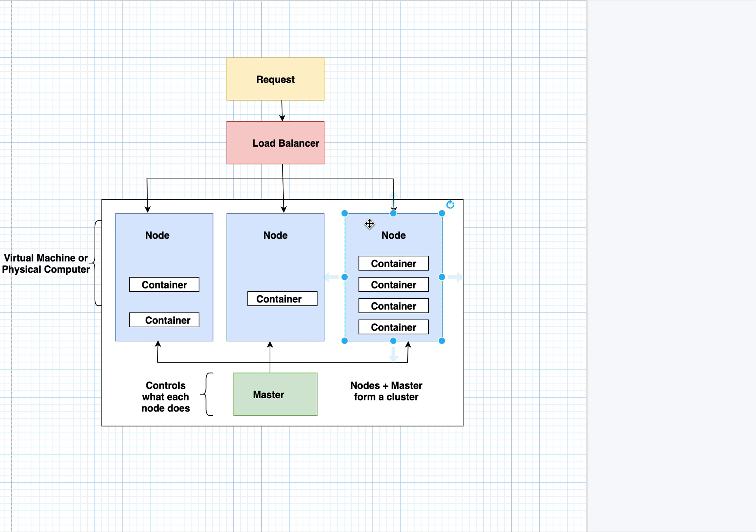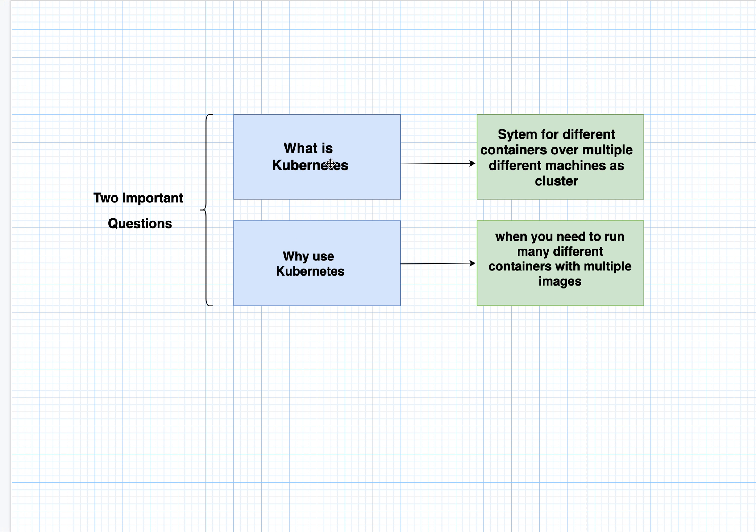To answer the initial questions: what is Kubernetes? Kubernetes is a system for running different containers over multiple machines as a cluster. You run your application components across different machines in the form of a cluster comprising a master and multiple nodes. Why use Kubernetes? If you have an application with multiple components and you want to run those components — created from multiple images — on different machines, Kubernetes is ideal. It is best suited for scaling out a microservices kind of architecture, where different components form your application.